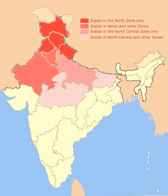However, that definition would also include major parts of Rajasthan, Madhya Pradesh, Jharkhand and West Bengal, and minor regions of Chhattisgarh and Gujarat.